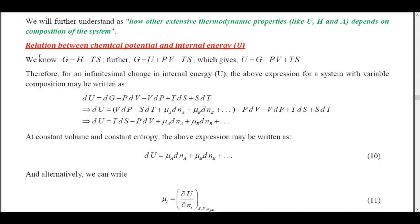Let us first understand the relation between chemical potential and internal energy. We know G = H - TS. If I substitute the enthalpy expression, I will get something like U + PV - TS. For an infinitesimal change, this expression becomes dU = dG - PdV - VdP + TdS + SdT.